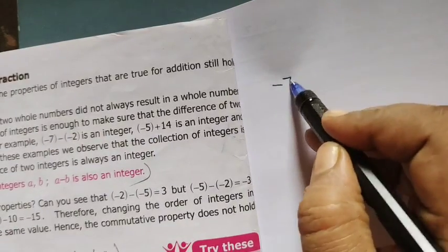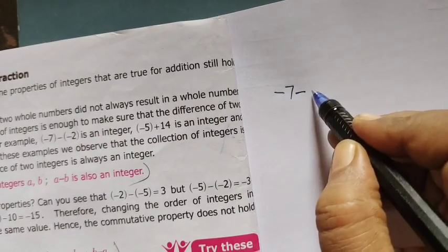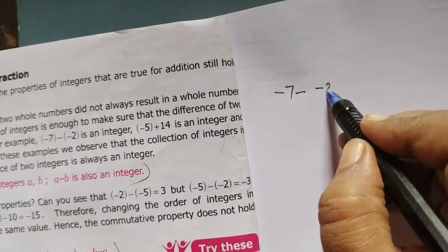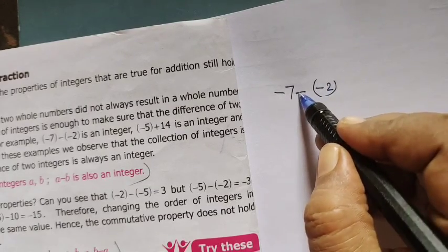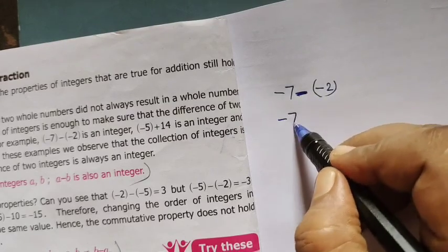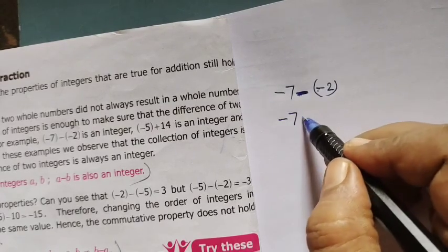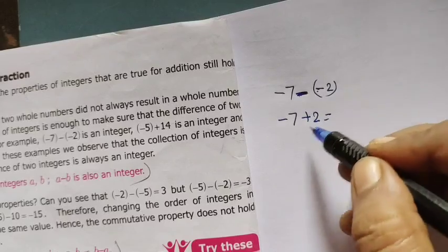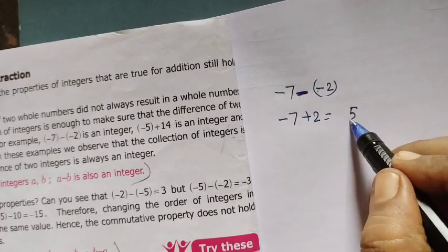Minus 7 is 1 integer. Then, minus 2 is 1 integer. 2 are separate. You will use minus sign. For separation, you are using minus sign. Already I told you minus minus you write plus 2.